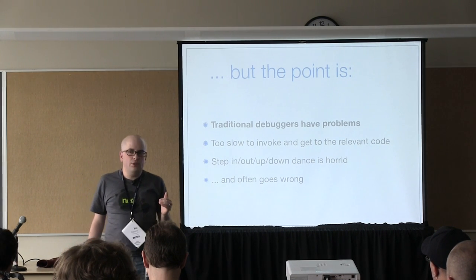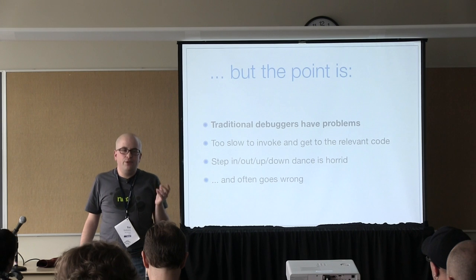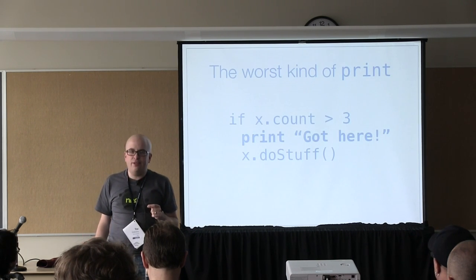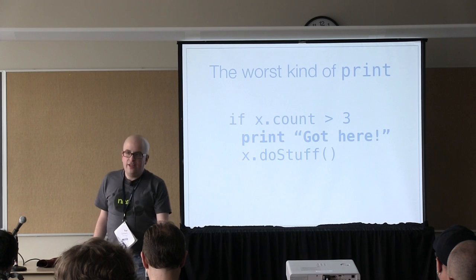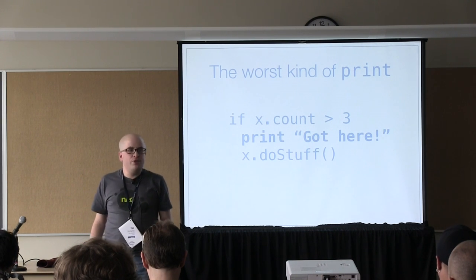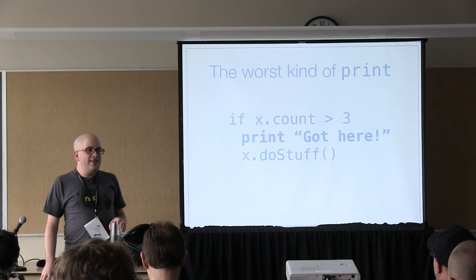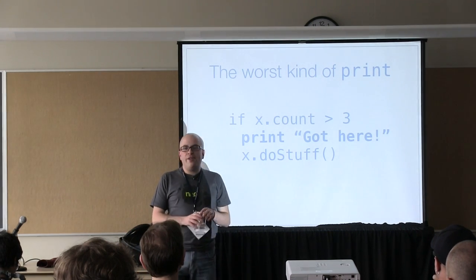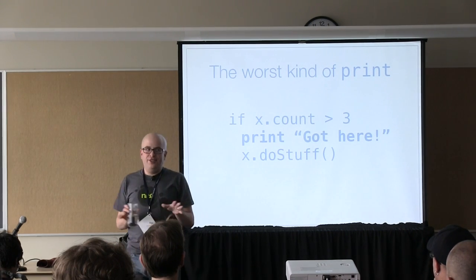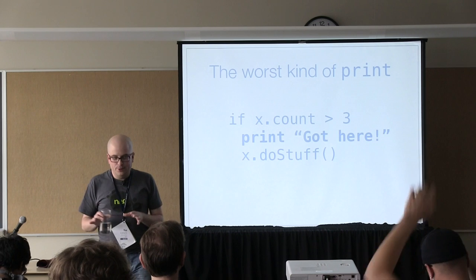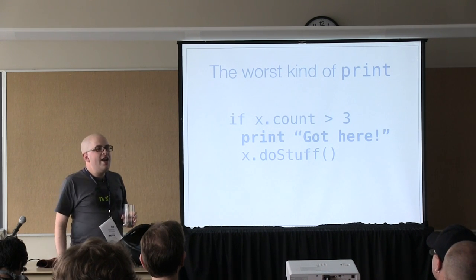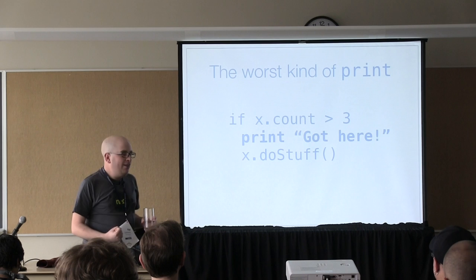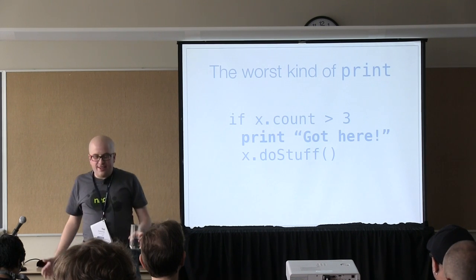A lot of the time, especially for working out code flow, if you're using print statements, I had to put this in because this is my most hated kind of print: the kind that doesn't output a variable value, it just says 'yes, I got here, I went into this branch, we're fine.' It's so depressing when you have to resort to this. It just drives me nuts. We should be past this by now — there are so many better things we can do.